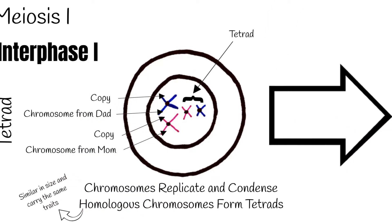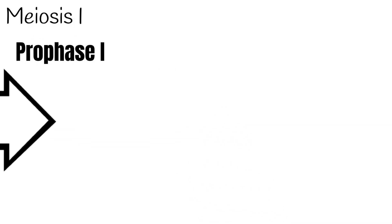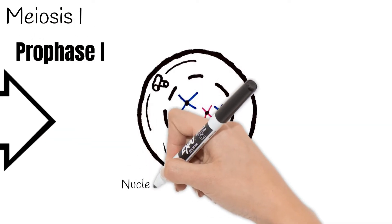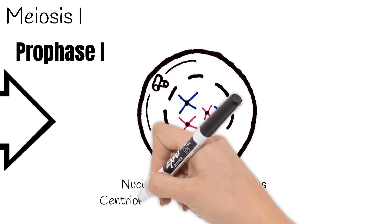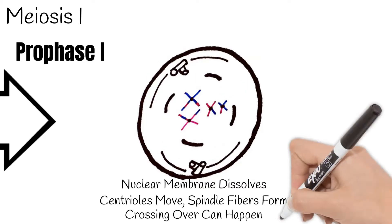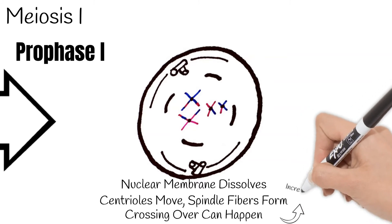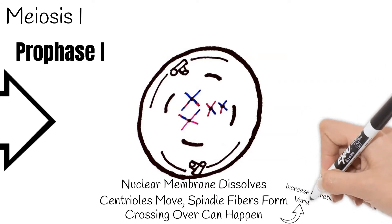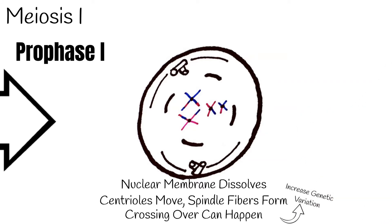Next is prophase 1. Here, the nuclear envelope starts to disappear. Centrioles move and spindle fibers form. Also, during prophase 1, crossing over often happens. This is when the chromatids in the tetrad swap sections of DNA. This happens to increase genetic variation, so that you are not exactly like your siblings.